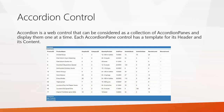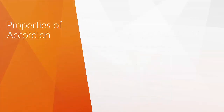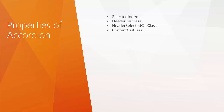Each Accordion pane control has a template for its header and its content. The properties available include Selected Index, which specifies which pane to select. We also have CSS properties such as Header CSS Class, Header Selected CSS Class, and Content CSS Class. Once these are set with a stylesheet class name, you will get the styles for the accordion header and content when you select a header.